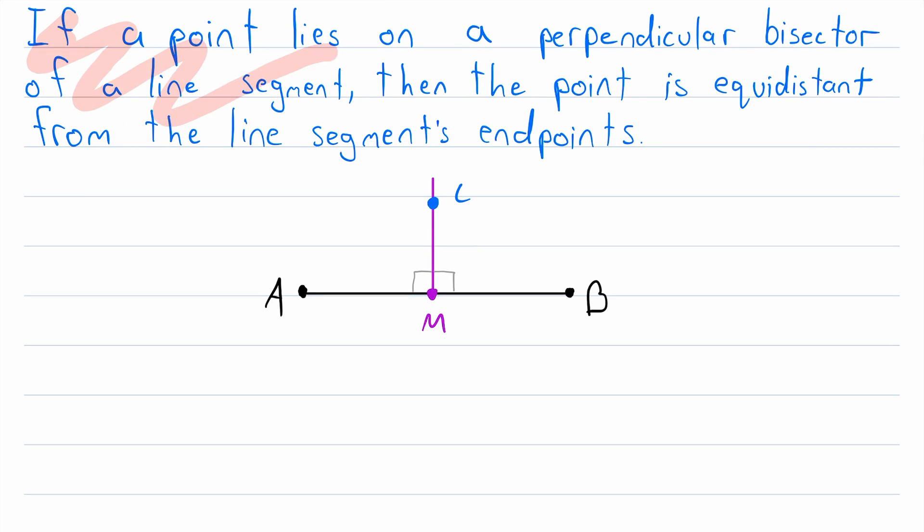Here I have written the theorem again for the sake of clarity. It says that if a point lies on a perpendicular bisector of a line segment, then the point is equidistant from the line segment's endpoints. So here in our generic sketch, we've got our point C on this perpendicular bisector.